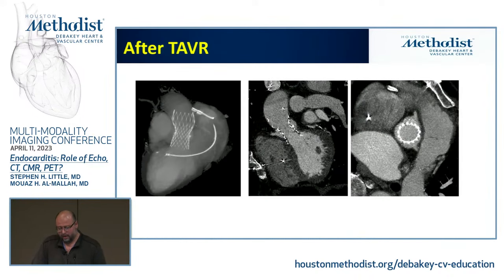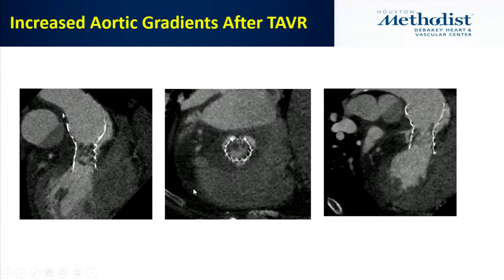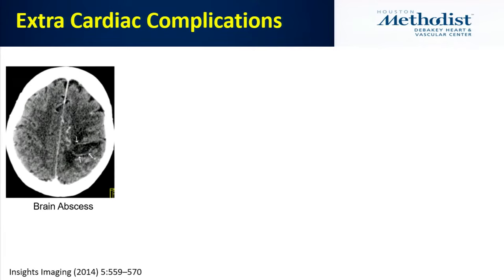Another area where CT is useful is after TAVR. One of my patients had a TAVR, went home, came back febrile with shortness of breath, elevated gradients, and the whole valve was full of vegetation. Unfortunately she didn't survive. With CT we can also look at extracardiac complications — splenic infarcts, renal infarcts at the upper pole, and aortic aneurysms — providing evidence of embolization.